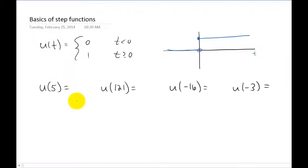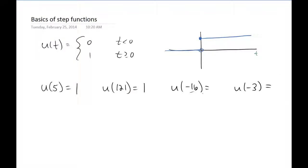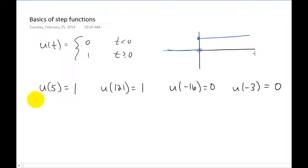This often seems fairly trivial to students, but I always like to ask the question: what is u of phi? Well, a step function can only have two values — zero and one. Because our t value is positive, greater than or equal to zero, our step function has a value of one. And whenever the argument inside of your step function is a negative number, the value of the step function is just going to be zero.